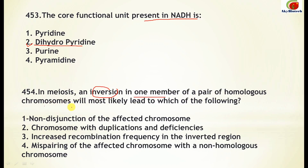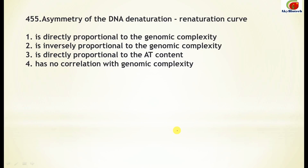Question 454: In meiosis, an inversion in one member of a pair of homologous chromosomes will most likely lead to which of the following? The correct option is: chromosomes with duplications and deficiencies. So in meiosis, if an inversion occurs in one member of a homologous chromosome pair, it will lead to chromosomes with duplications and deficiencies.